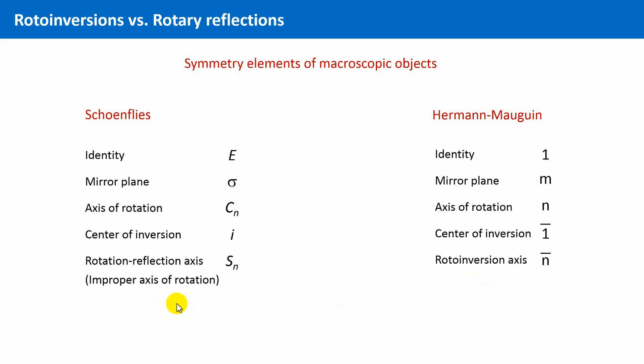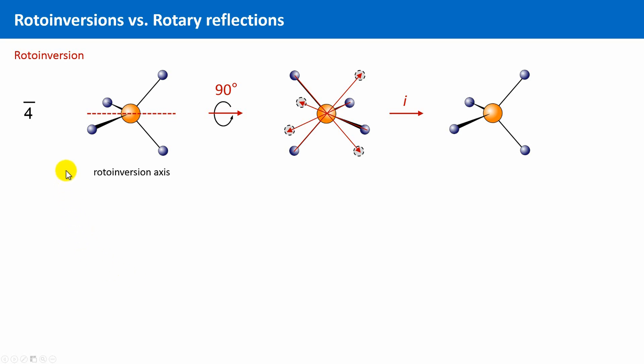Okay, let's see in a first example what the difference between a rotoinversion and a rotary reflection is. You already know that a tetrahedron has a four-fold rotoinversion axis. This is shown here again. First a rotation by 90 degrees is carried out, followed by a mirroring at a point, an inversion, namely at the center of this tetrahedron.